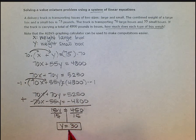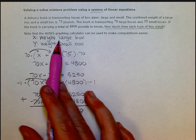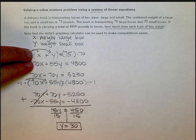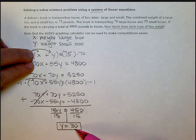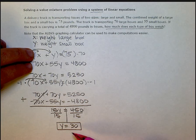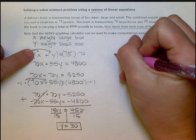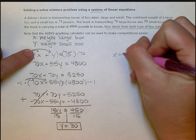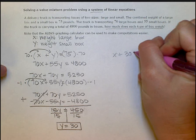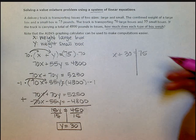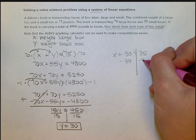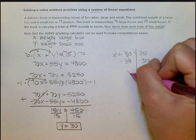Now I need to find my x value, or the weight of a large box. I'm going to go back to one of my two original equations, and I'm going to plug 30 in for y. Of these two equations, the first one looks a little bit easier, so I'm going to use that one. I'm going to do x plus 30 instead of y equals 75. Now I just need to solve for x. So I subtract 30 on both sides, and I get x equals 45.